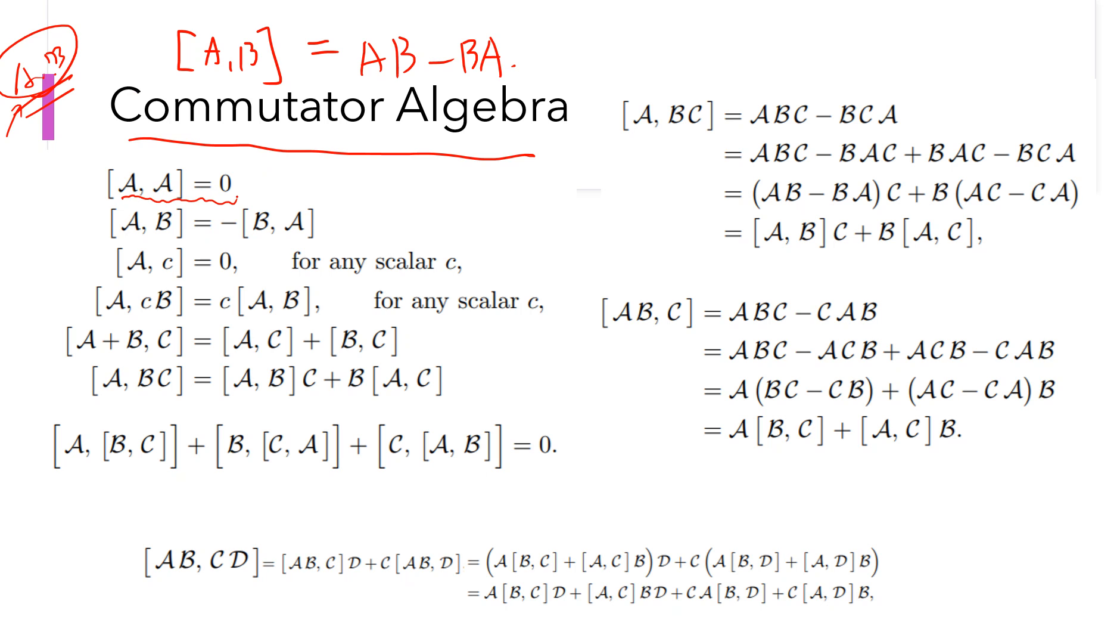So the first one is [A, A] equals zero. This is trivial, right? Because it's just A squared minus A squared is zero. And [A, B] = -[B, A]. So there's a negative sign.